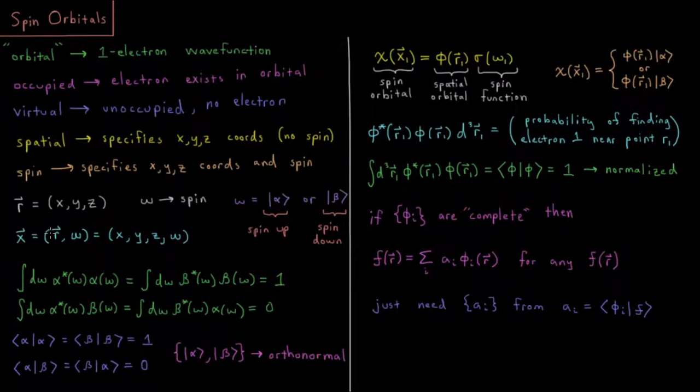So overall, putting these two together, what we have for a spin orbital, its coordinates are generally indicated by the vector x. I know that's confusing with the Cartesian axis x, but you kind of have to figure out from the context whether we're talking about a single Cartesian variable or whether we're talking about the three Cartesian variables plus the spin.